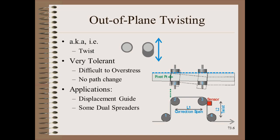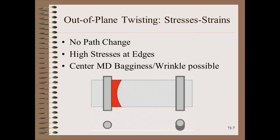Some dual spreaders also use this principle to separate numerous slit lanes without risking bending or wrinkling. While twisting is much more tolerant, there are limits to how far you can twist. If you go too far, you can overstress the edges; you can cause MD bagginess or a wrinkle in the center of the web. The point of this review is to show that using one-size-fits-all alignment standards might not make sense from a web handling point of view.